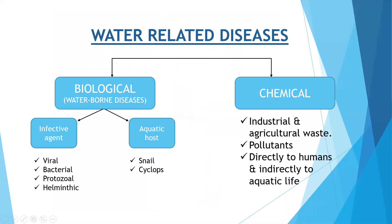Next are water-related diseases. There are two types: biological and chemical. Biological includes waterborne diseases, which are divided into those caused by an infective agent directly, and those due to an aquatic host — the flora residing in the water. Students were asked to identify various viral, bacterial, and protozoal waterborne diseases.